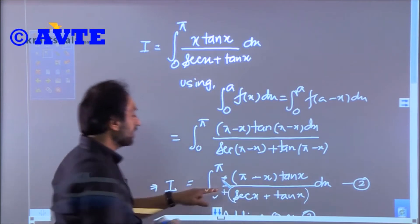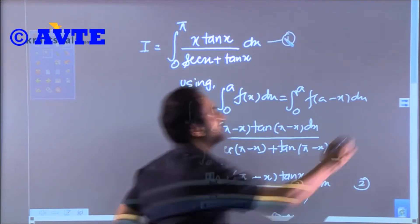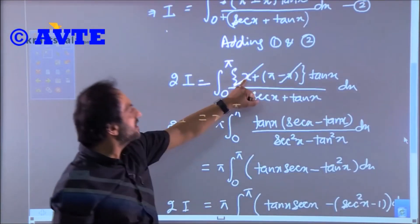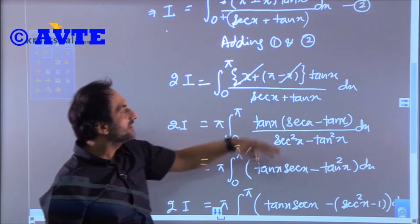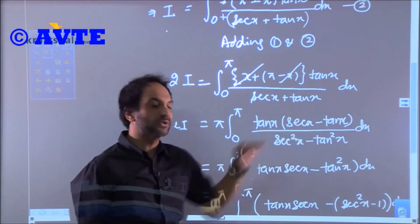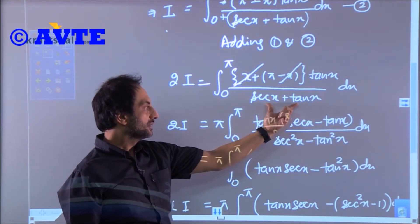Now add first and second. What will happen? The beautiful part is that this x will disappear and you are only left with the trigonometric part. Now you can rationalize because you wanted to rationalize.